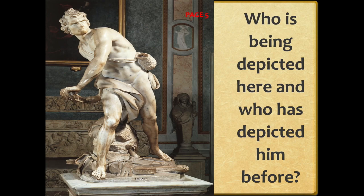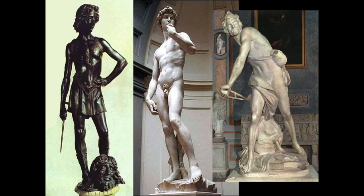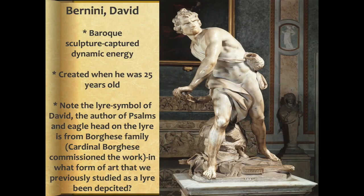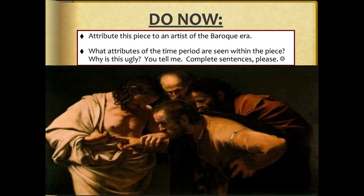Baroque reminds you of Hellenistic Greece, so we always have these ebbs and flows of things that go in and out of vogue in art history. We have various images here of David: an Early Renaissance David by Verrocchio — they actually think da Vinci was the model — Michelangelo's David, the most famous, and then Bernini's. All represent various states of the story of David and Goliath, and all are distinctly part of the time period in which they were created.